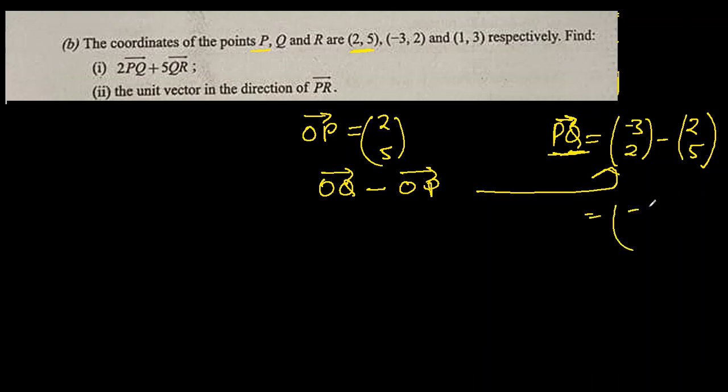Similarly, we'll find QR now. The position vector of R will be (1, 3) minus position vector of Q which is (-3, 2). It is 1 minus (-3) is 4, 3 minus 2 is 1. So we know PQ and QR now.